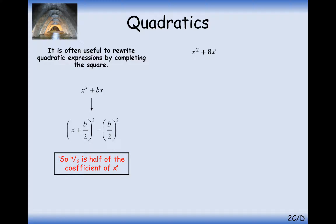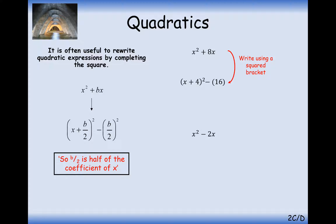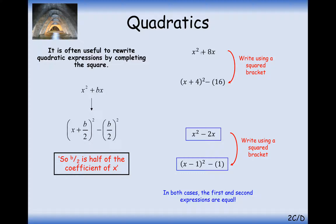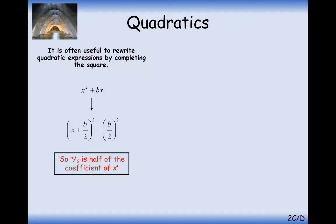Let's look at x squared plus 8x. Half the 8 gives 4, so it's x plus 4 squared, then take away 4 squared, which is 16. For x squared minus 2x, half the 2 gives 1, so it's x minus 1 squared, then take away 1 squared, which is 1. These two forms are equal expressions — they're exactly the same thing just written in a different style. No matter the sign on the x term, you always subtract the square value.